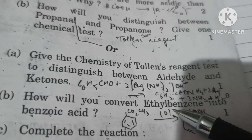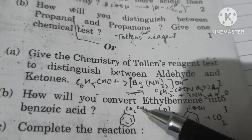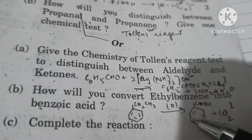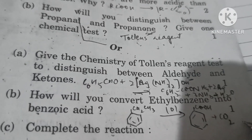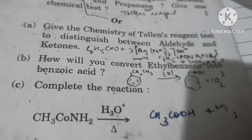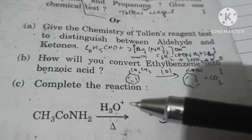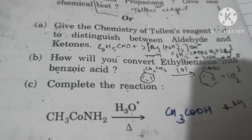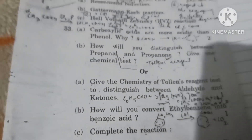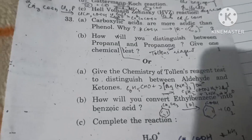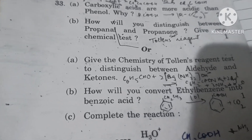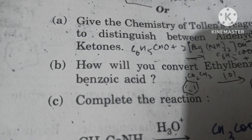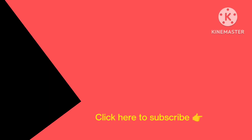How will you convert ethylbenzene to benzoic acid? On oxidation, ethylbenzene gets converted to benzoic acid; the extra carbon is released as carbon dioxide. When an amide is acid hydrolyzed, it forms a carboxylic acid along with ammonia. That's all for this paper — if you like the video please share and subscribe, thank you, have a nice day.